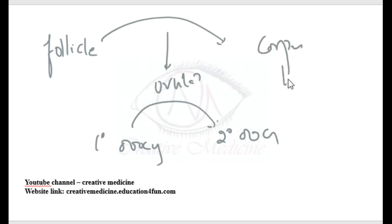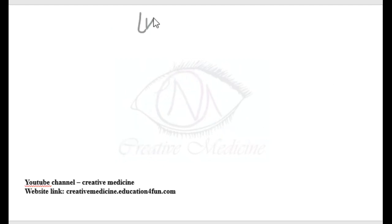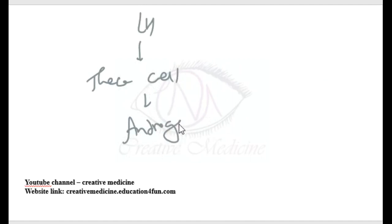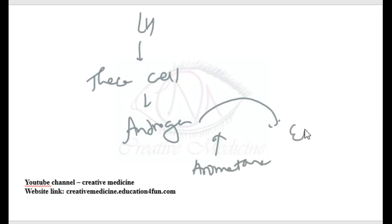Second, luteinizing hormone also acts on theca cells, causing them to produce androgens. In the granulosa cells and adipose tissue, these androgens get converted to estrogen by the aromatase enzyme. Luteinizing hormone also acts directly on granulosa cells.